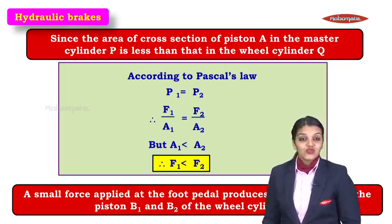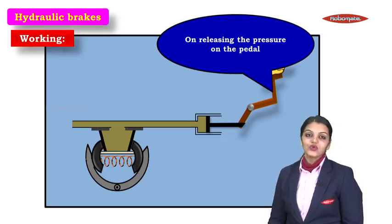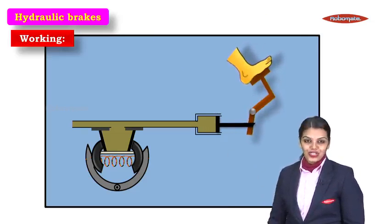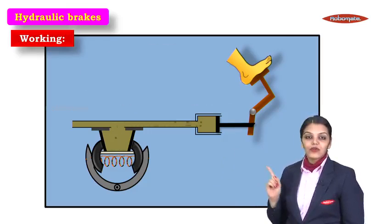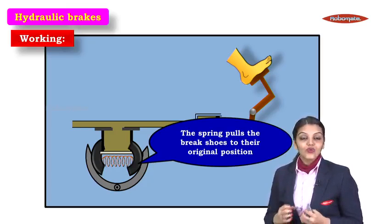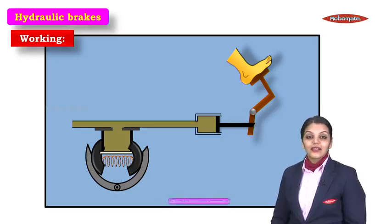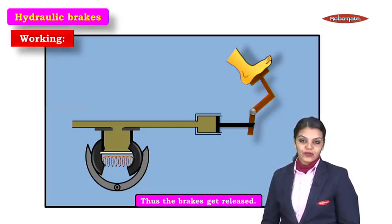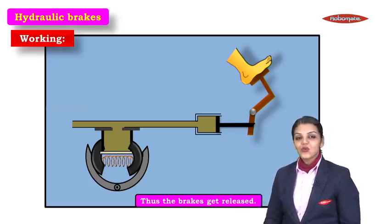Now let's see what happens when we want to release the brakes. The first thing we do is release the pressure from the foot pedal — we take our feet off the pedal and the piston comes back to its original position. When the piston returns, the liquid runs back from the wheel cylinder to the master cylinder. The pistons return to their original positions, and the spring helps the brake shoes come back to their original position. The rim of the wheel is then free to move and the brakes have been released.